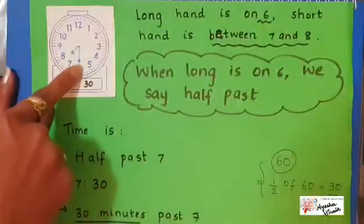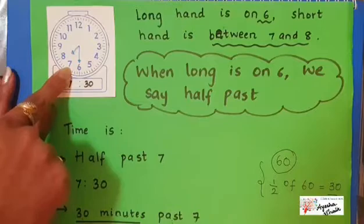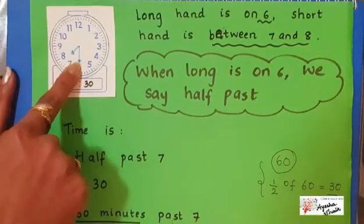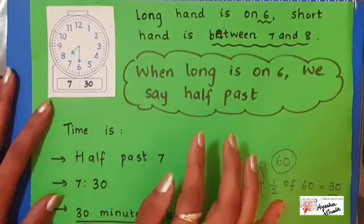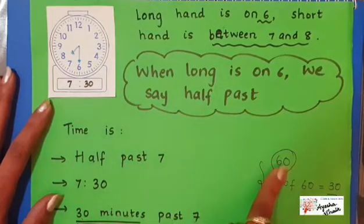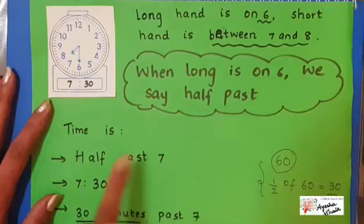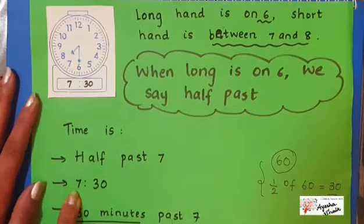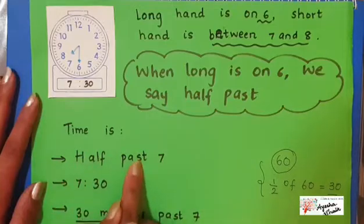When the long hand is on 6, we say half past. When the short hand is between two numbers, we look at the smaller number. So the time is half past 7. That was the analog way. For the digital way, half past means 30 minutes — one hour has 60 minutes, and half of 60 is 30. So we write 7:30. For o'clock it was 00; for half past it is 30.